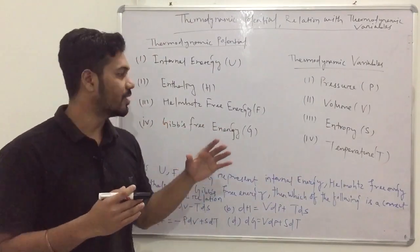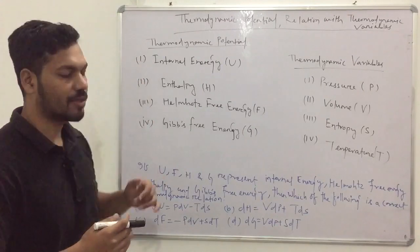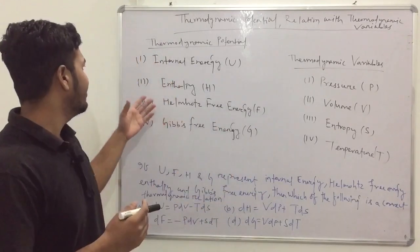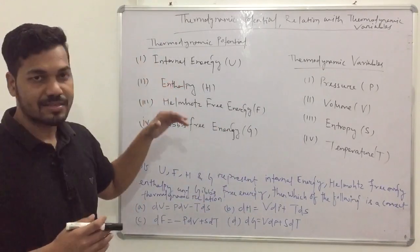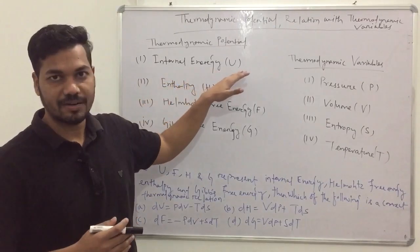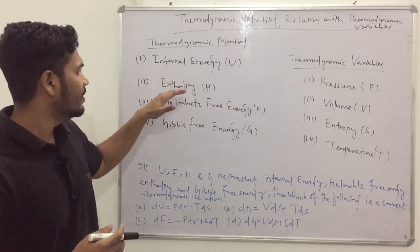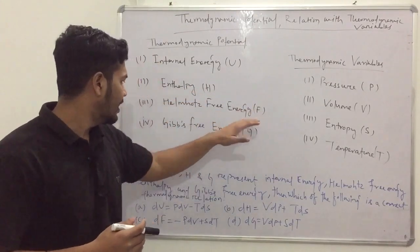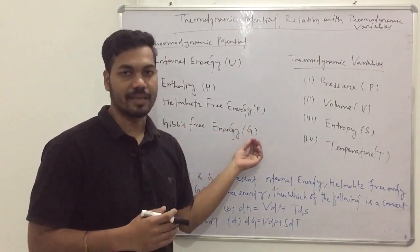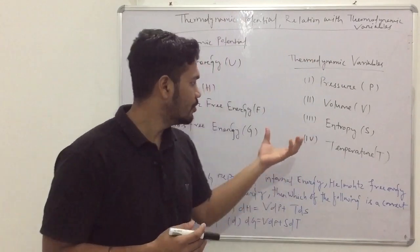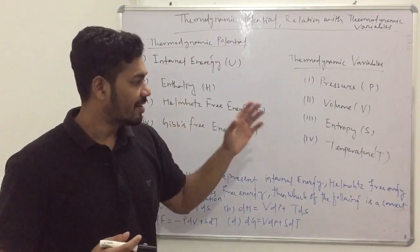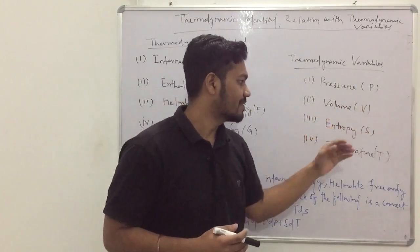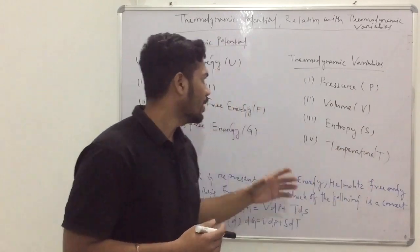First of all, I want to inform you there are basically four types of thermodynamic potential — these are nothing but different forms of energy. In thermodynamics, the potentials used are: internal energy represented by U, enthalpy represented by H, Helmholtz free energy represented by F, and Gibbs free energy represented by G. The thermodynamic variables related to these potentials are pressure P, volume V, entropy S, and temperature T.